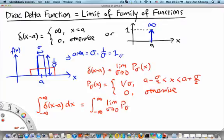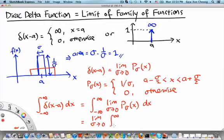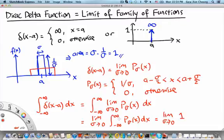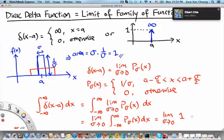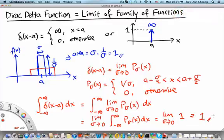This should equal the integral from −∞ to ∞ of lim_{σ→0} p_σ(x) dx. If we are allowed to interchange the limit and the integral — which I will explain later — then this becomes lim_{σ→0} of 1, because the integral of all members of the rectangular family equals 1. Therefore this limit is 1, which is what we expect: the Dirac delta function is normalized.